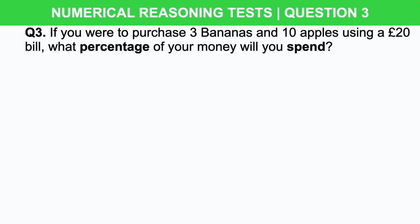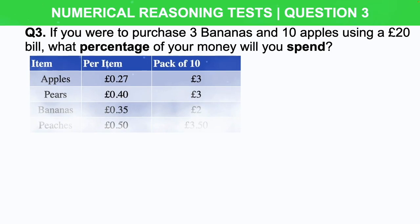Now it is time to make these a bit more challenging by mixing in visual graphs and tables. These numerical question types are known as data interpretation tests and are frequently used in Network Rail numerical reasoning tests. Here's the question: if you were to purchase three bananas and 10 apples using a £20 bill, what percentage of your money will you spend? Here is that table.